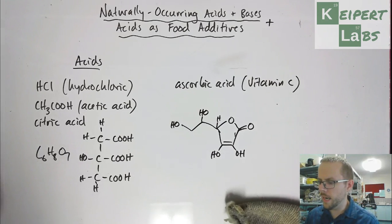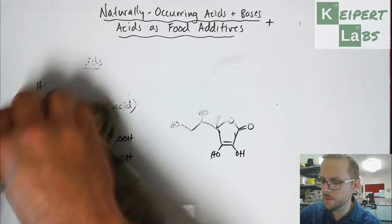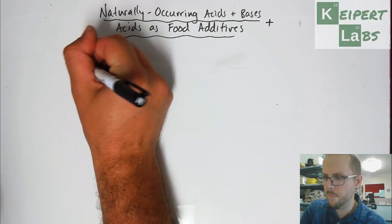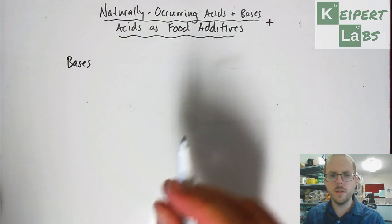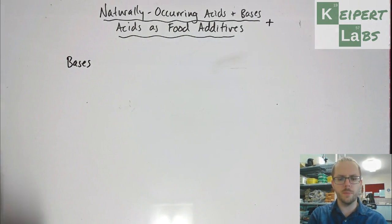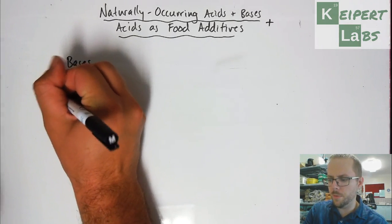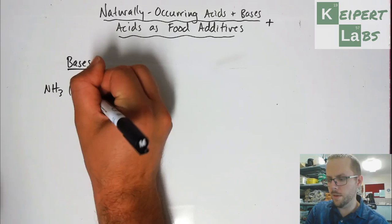Let's have a quick look at some naturally occurring bases. So, looking at naturally occurring bases here. So the first one that we should be fairly familiar with by now is ammonia, NH3.